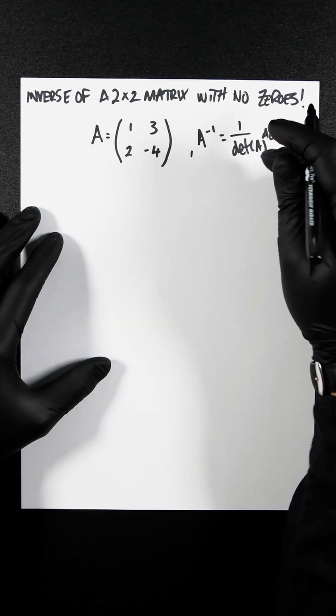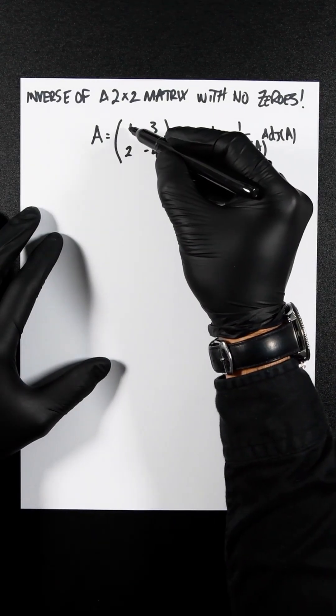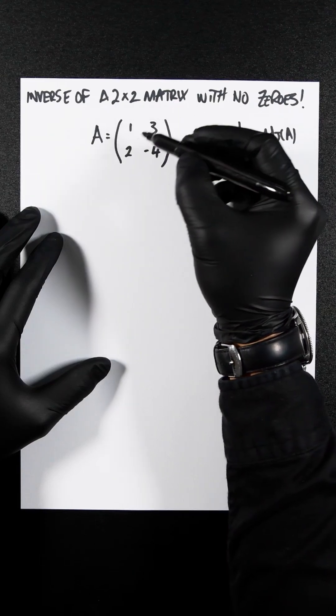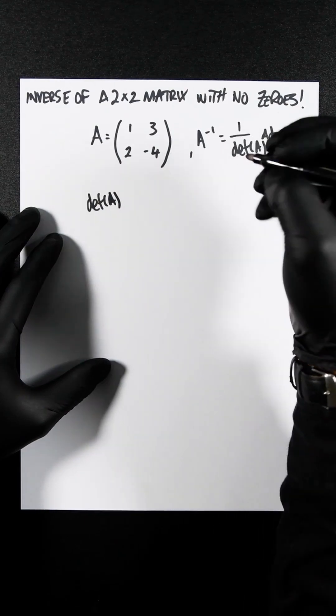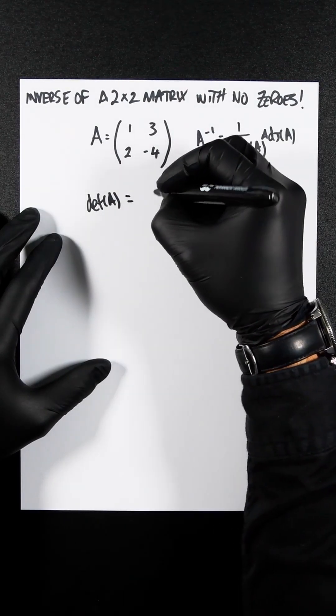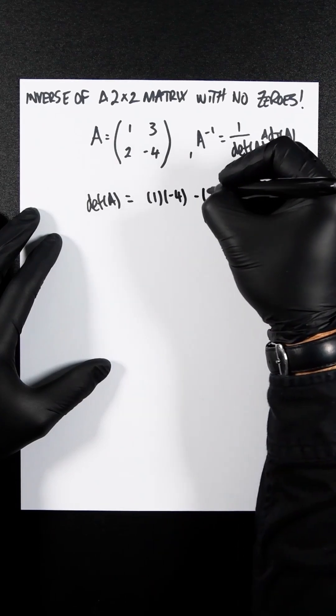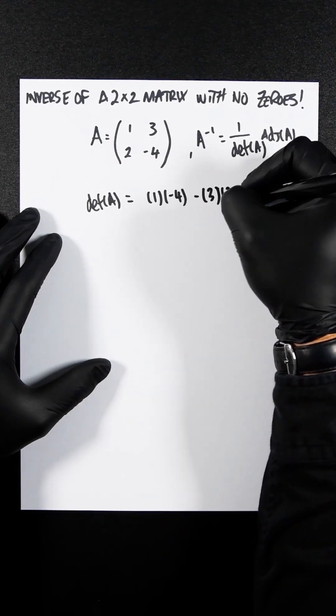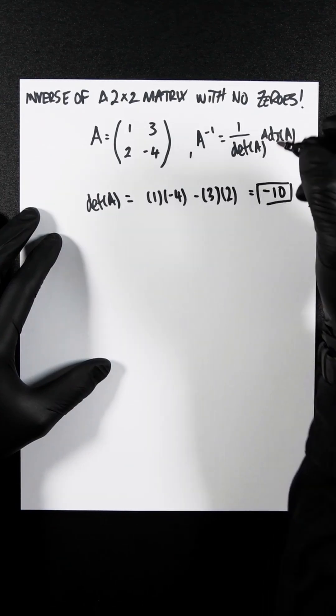So first, let's deal with the easy part, the determinant. So it's a 2 by 2, so you multiply 1 and minus 4, and you deduct it by 2 and 3. So the determinant of A is going to be 1 minus 4 minus 3 times 2. So this is going to be minus 10. So we've got our determinant.